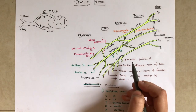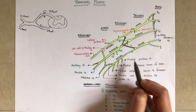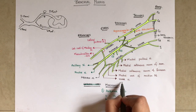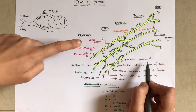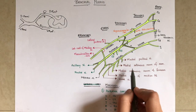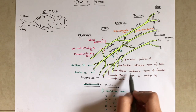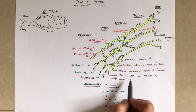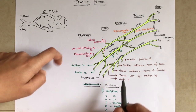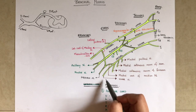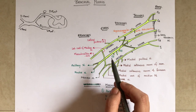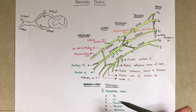From the medial cord, everything starts with 'medial' except for the ulnar nerve. So you have four nerves starting with medial and one ulnar nerve: medial pectoral nerve, medial cutaneous nerve of arm, medial cutaneous nerve of forearm, medial root of median nerve, and the ulnar nerve.